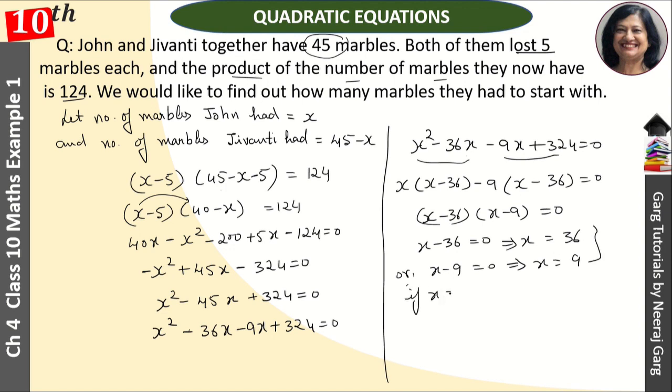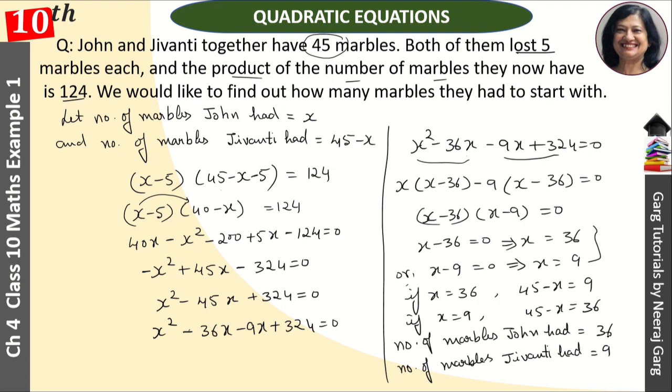If x is equal to 36, then 45 minus x is 9. It means number of marbles John had is 36 and number of marbles Jeevanti had is 9, and vice versa. It can also be that John has 9 and Jeevanti has 36.